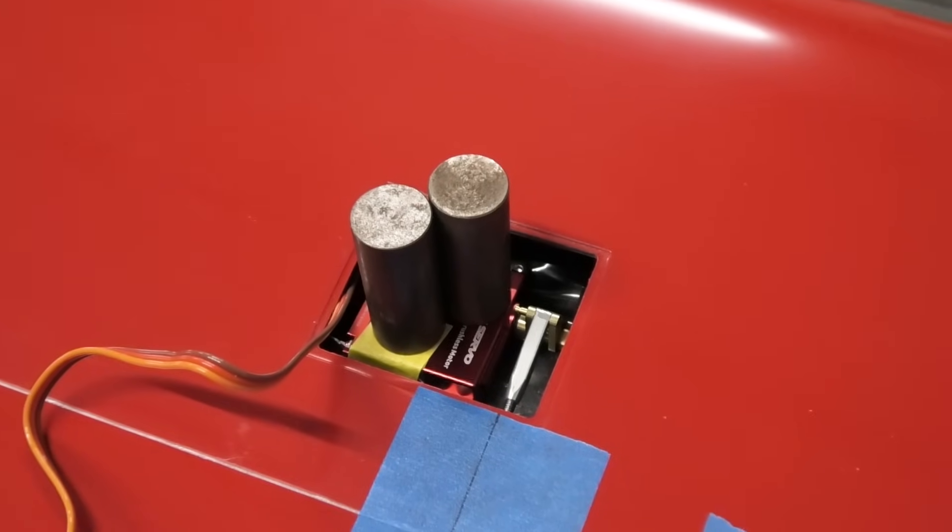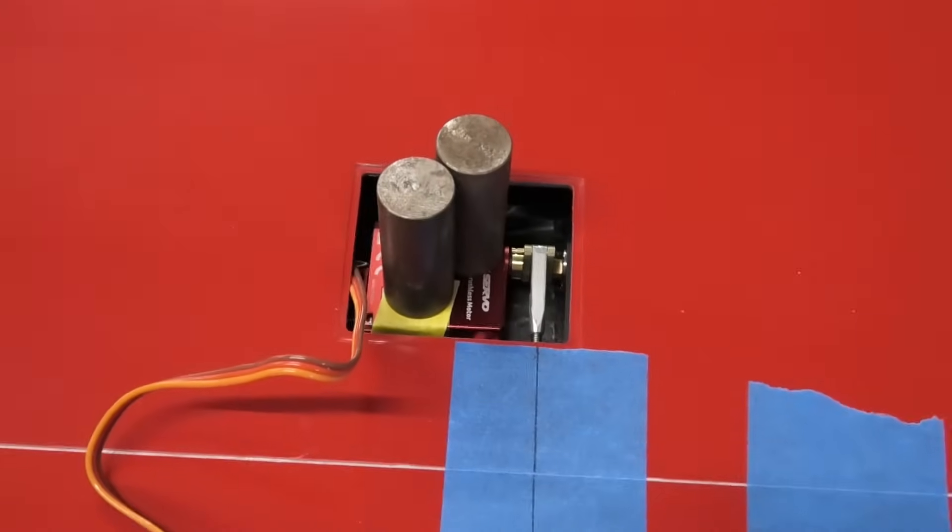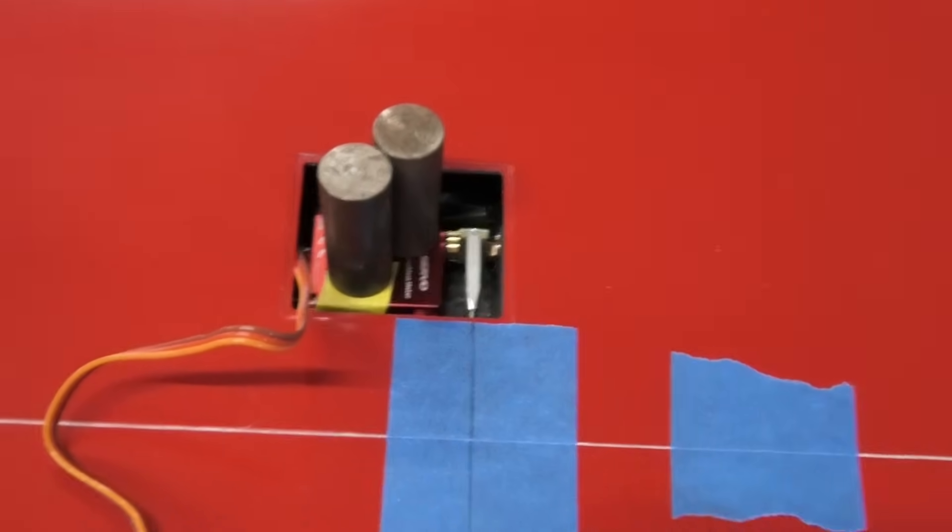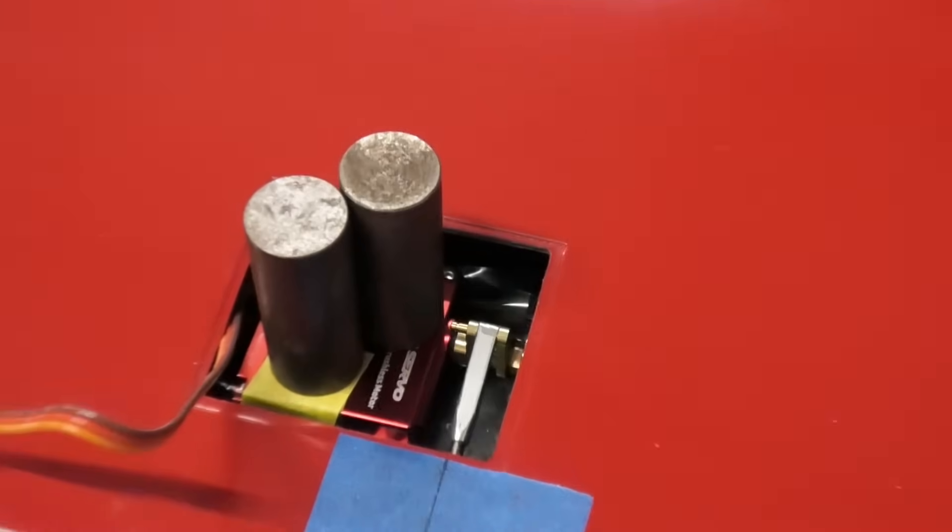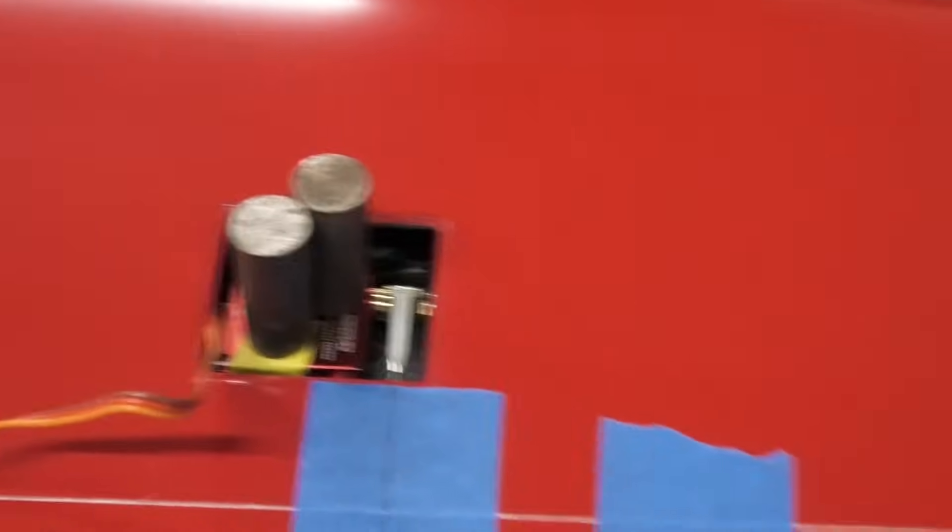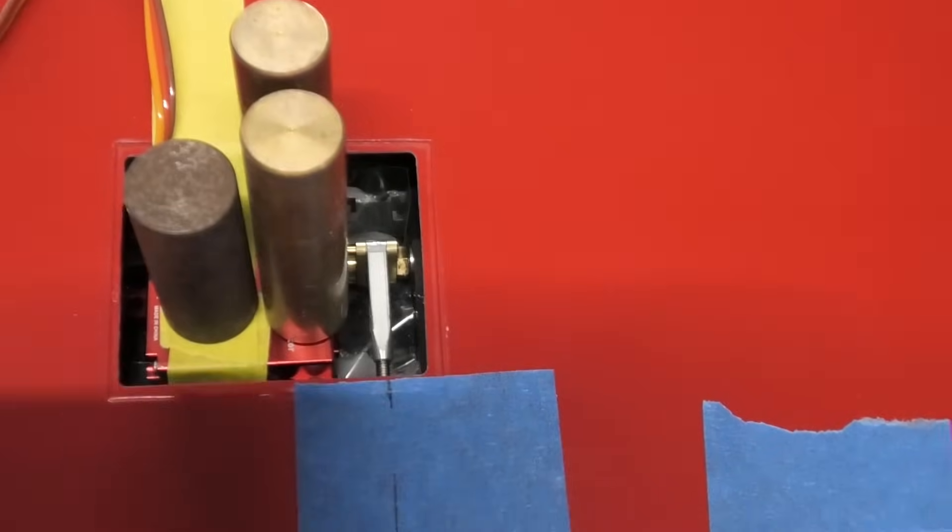Skipping ahead a few steps, servos are installed, they're epoxied in place. I got the ballast slugs holding everything down as you can see. That's the one closer to the tip, and then if we scroll down past the spoiler servo.